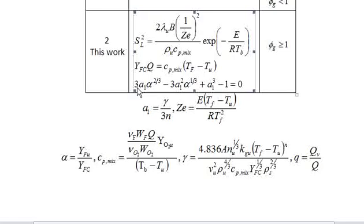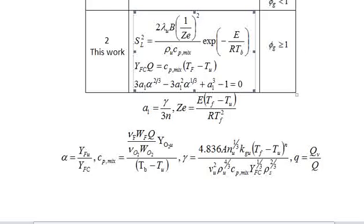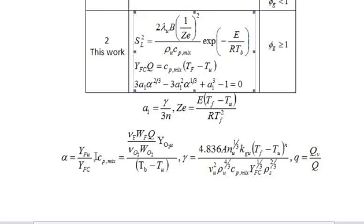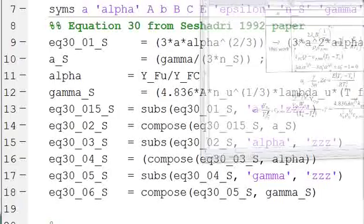So let's say we look at this set of equations. We look at the third one down here. This 3A1 alpha to 2 thirds minus 3A1 squared alpha to 1 third plus A1 cubed minus 1 equals 0. So let's say we want to put that into MATLAB where A alpha is this term, A1 is this term, and those are the only two variables we have here.